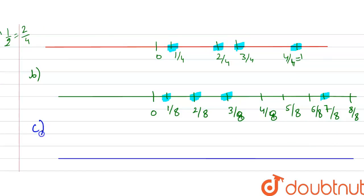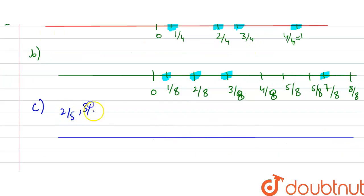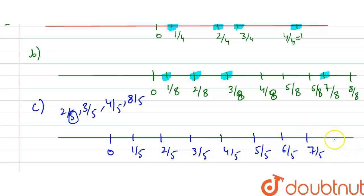The next number line is C. The points are 2/5, 3/5, 4/5 and 8/5. We take an interval of 1/5 since 5 is in the denominator. Starting from 0: 1/5, 2/5, 3/5, 4/5, 5/5 (which equals 1), 6/5, 7/5. Note that 8/5 is greater than 1, so it falls beyond the 1 mark on the number line. We draw and mark all four points: 2/5, 3/5, 4/5, and 8/5.